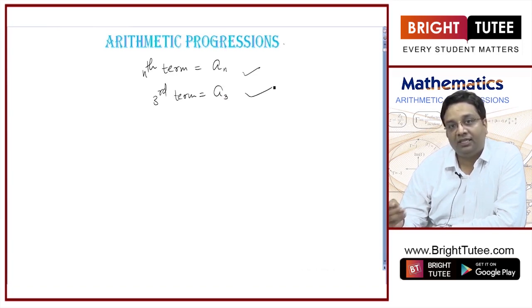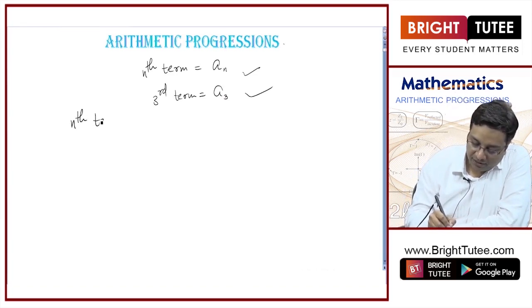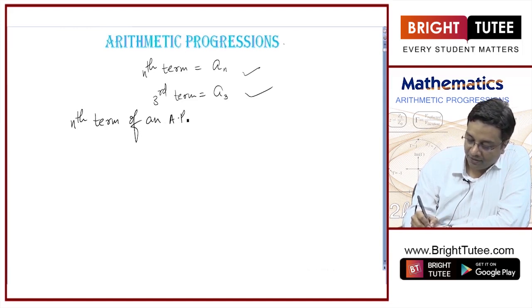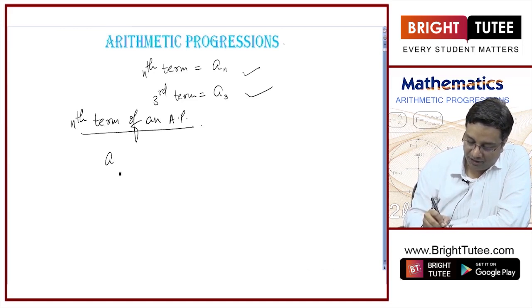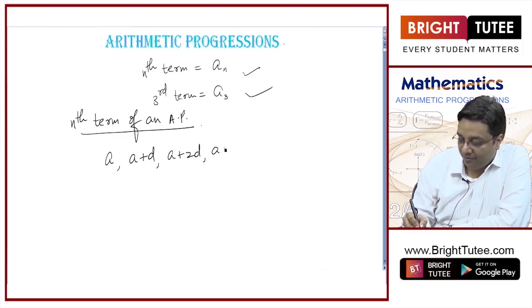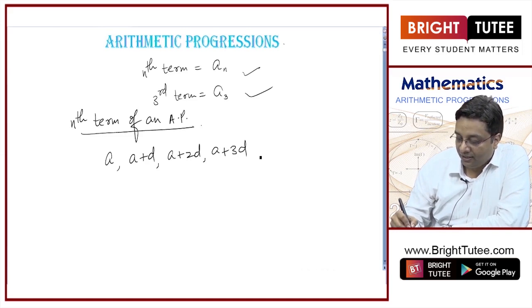Let us move on to what is nth term of an AP. What was an AP? AP if the first term is A and common difference is D, what will be the AP? A, A plus D, A plus 2D, A plus 3D and so on.